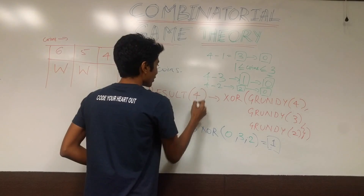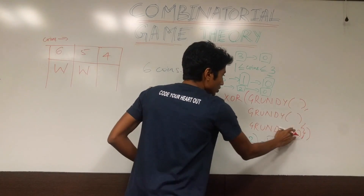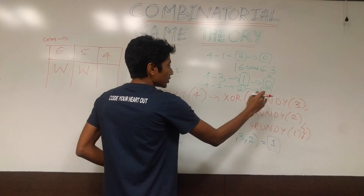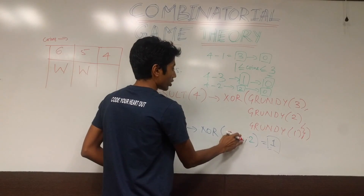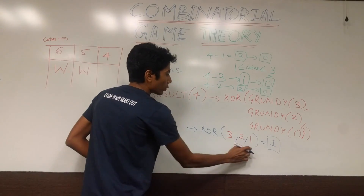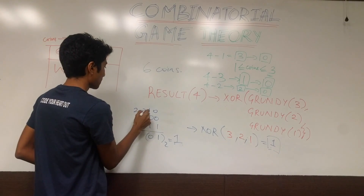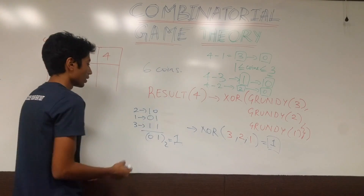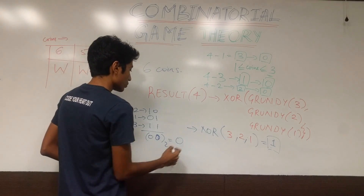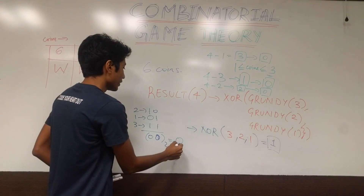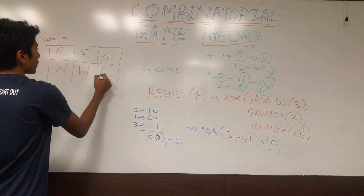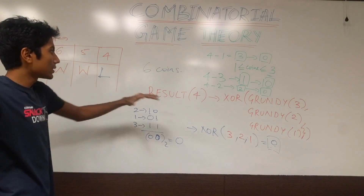Let's verify with the theorem. Result of 4 coins: XOR of Grundy(3), Grundy(2), and Grundy(1) — which are 3, 2, and 1. In binary: 11, 10, 01. XOR column by column: even number of 1s gives 0, even again gives 0 — result is 0. So result of 4 is losing. The theorem confirms what we understood logically. This makes complete sense.